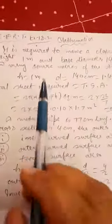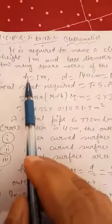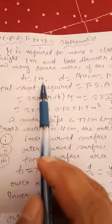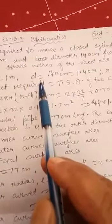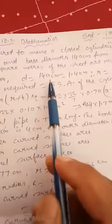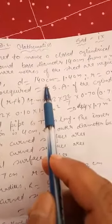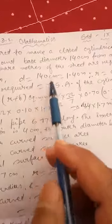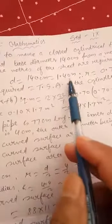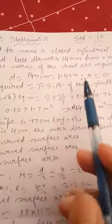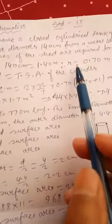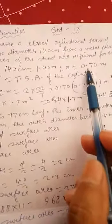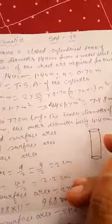Dear students, we can see here what is given. Height is given 1 meter. Diameter is equal to 140 centimeter. We have converted centimeter into meter, so 1.40 meter. Now, radius we can get: 0.70 meter.